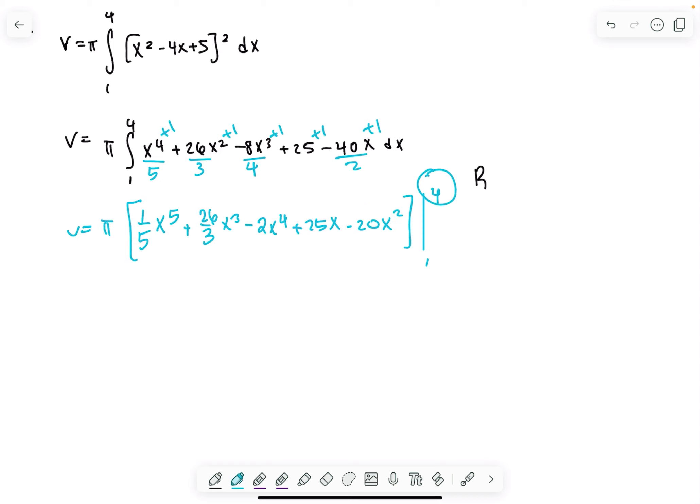If you do the whole math, you get that the volume is 78π/5. And that is the answer.